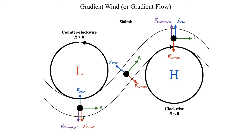Since Coriolis force is weaker in the trough base, and both Coriolis force and centrifugal force depend on wind speed, the wind must also be weaker there. In the ridge apex, a stronger Coriolis force means the wind must be stronger than what geostrophic balance alone would predict. At the interface between the two, there's no curvature, so this is simply geostrophic balance.